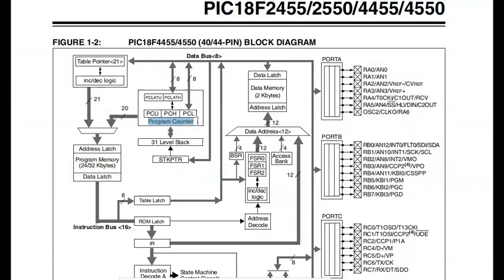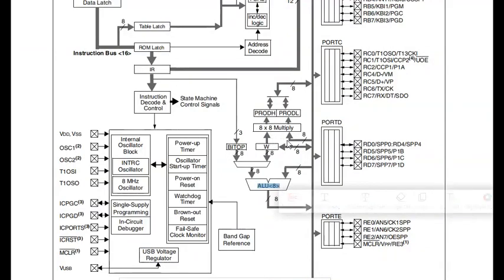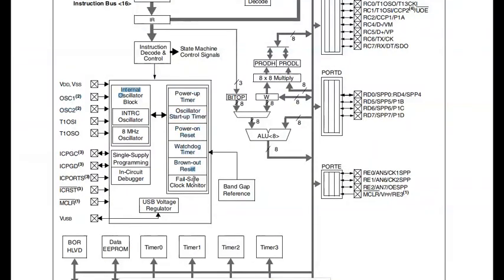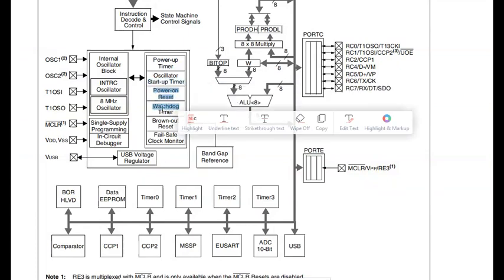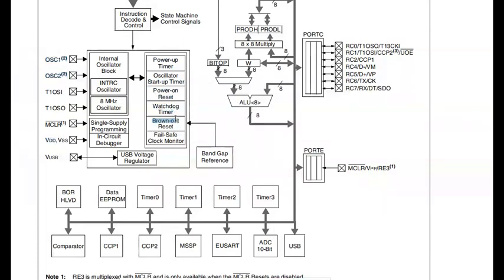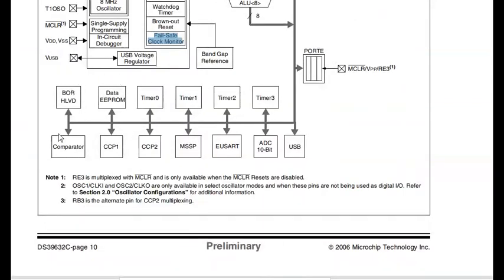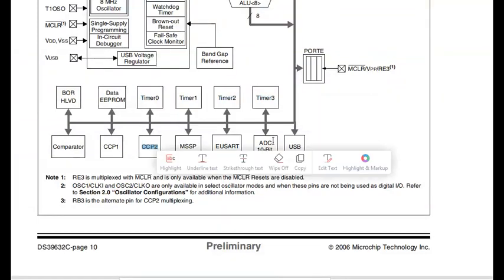There is a 21-bit program counter and an 8-bit ALU. The oscillator section consists of an internal oscillator block and an internal RC oscillator running at 8 MHz. Special features include power-up timer, oscillator start-up timer, power-on reset, watchdog timer, brownout reset, and fail-safe clock monitor. The peripherals include Timer, CCP, ADC, USB, and Comparator.